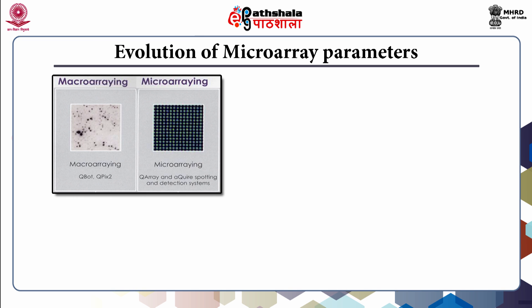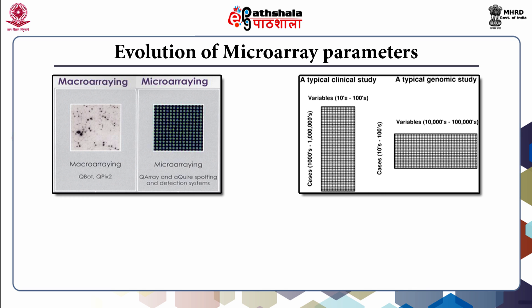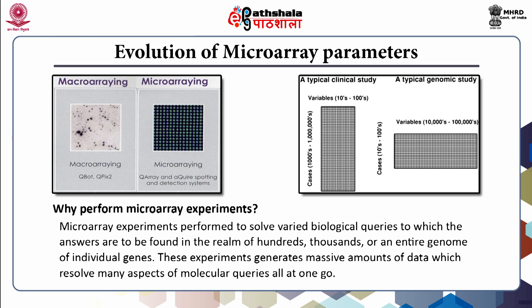The evolution of microarray transforms from a typical clinical study to a typical genomic study. When comparing macroarray versus microarray, in a typical clinical study the number of variables runs from tens to hundreds, requiring thousands to lakhs of cases. Whereas in a typical genomic study, the number of variables can range from ten thousands to one lakh, requiring only tens to hundreds of cases. Microarray experiments generate massive amounts of data which resolve many molecular queries all in one go.